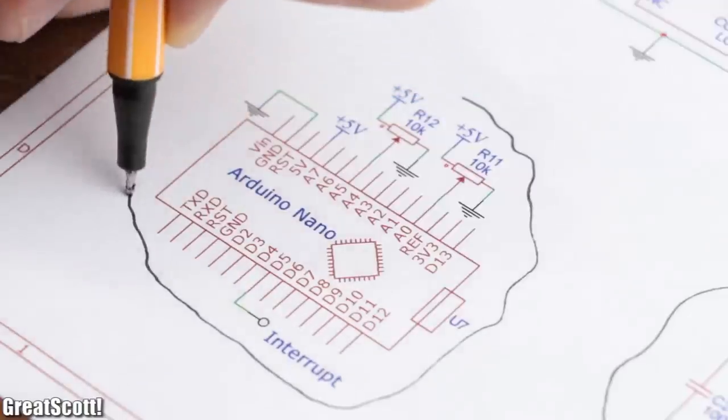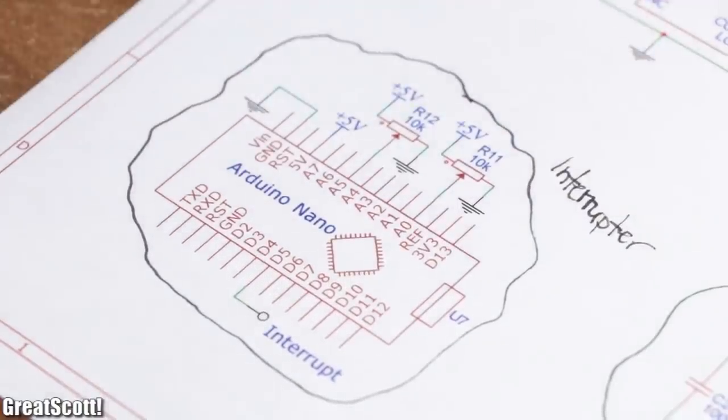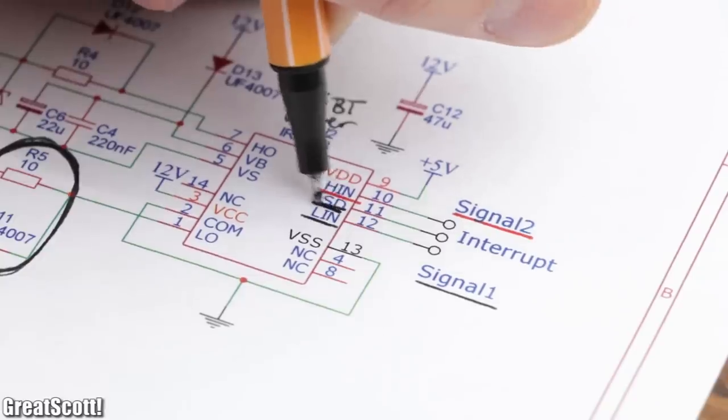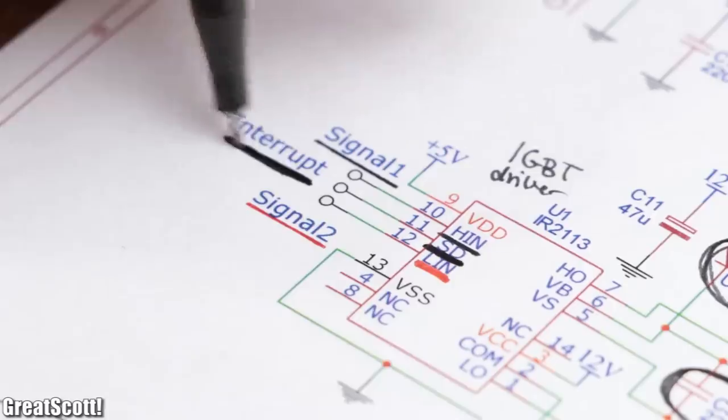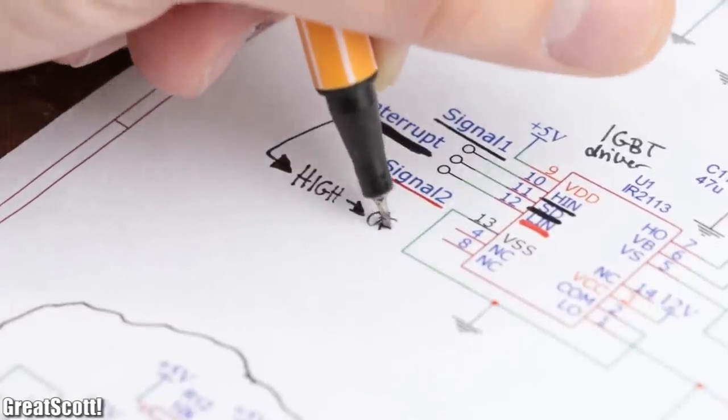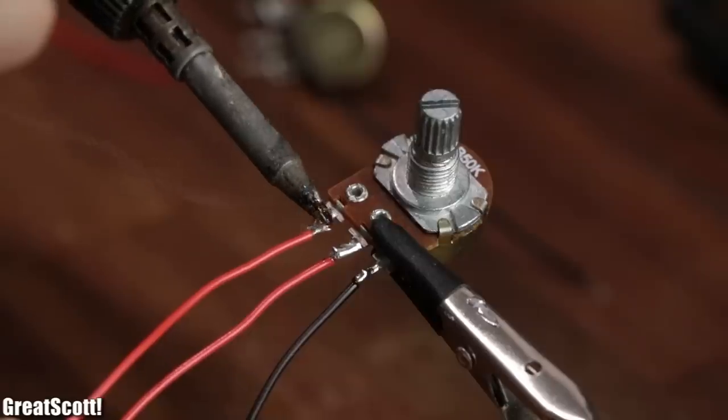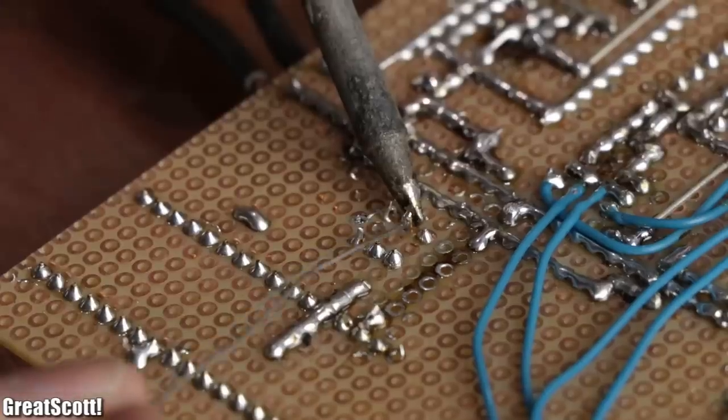To fix that, you usually utilize an interrupter, which is in my case the Arduino. Its pin 5 directly connects to the SD or shutdown pin of the MOSFET drivers and turns them off completely if pin 5 is high, or turns the drivers on if pin 5 is low.